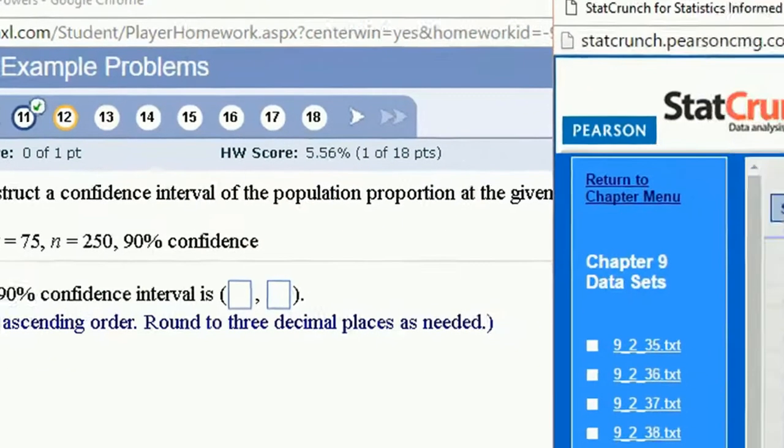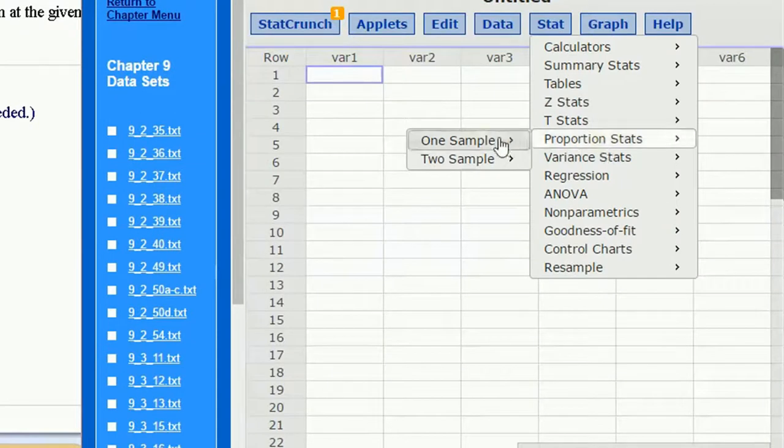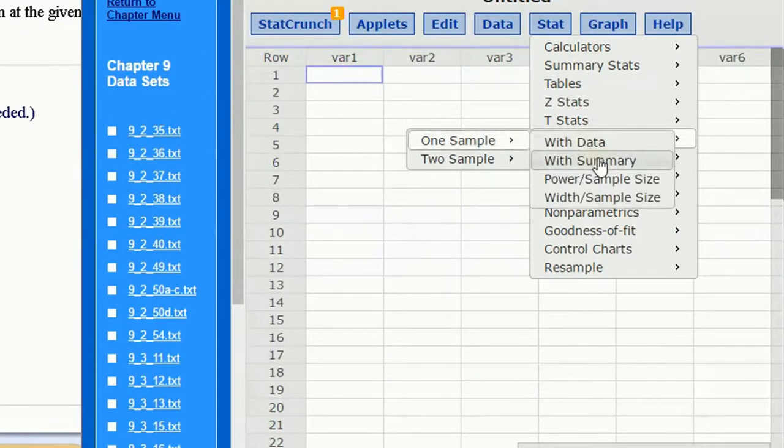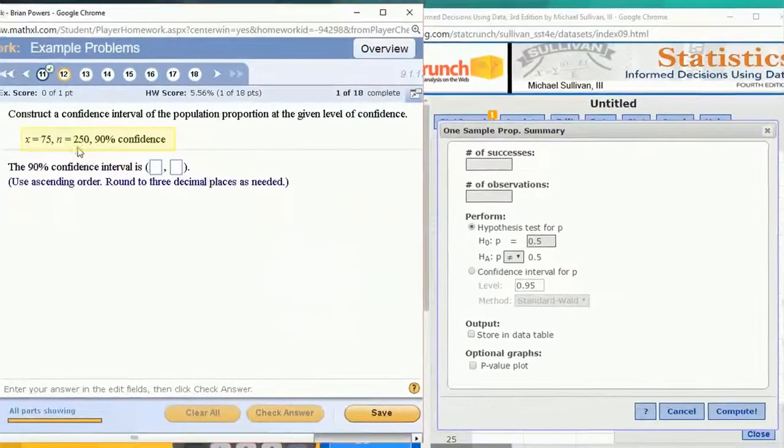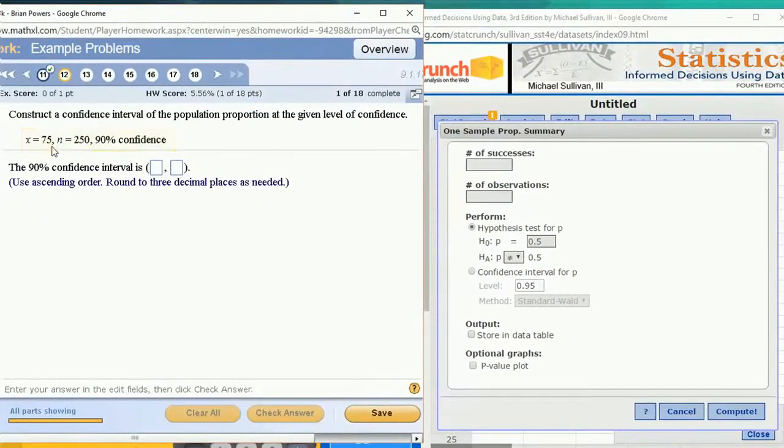This is going to be under Proportion Stats, One Sample with Summary, since we're given the summary of how many people from our sample size of 250. 75 out of 250 said yes to some survey question.